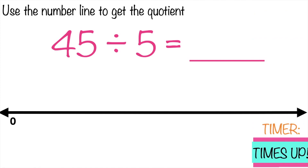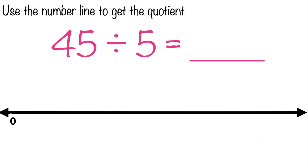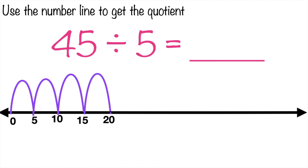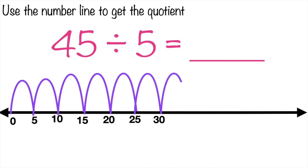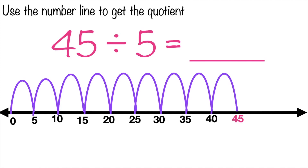Time's up! Let's see if your answer is correct. Again, we're going to skip count by 5 until we reach 45. Let's do it together. 5, 10, 15, 20, 25, 30, 35, 40, 45. So what is the quotient? How many jumps do you have? That's correct! It's 9. So we have 45 divided by 5 equals 9.